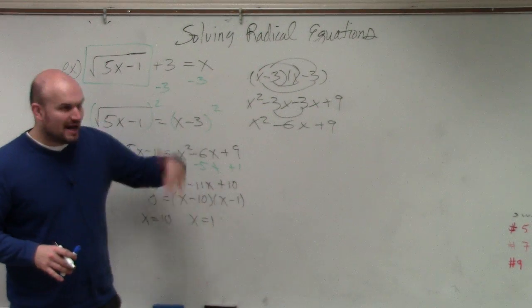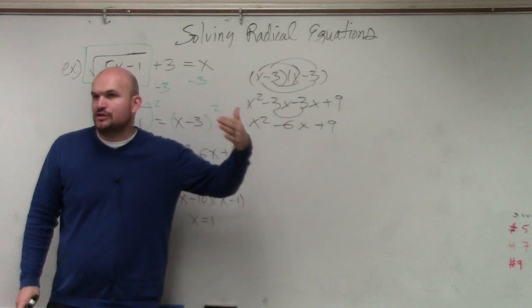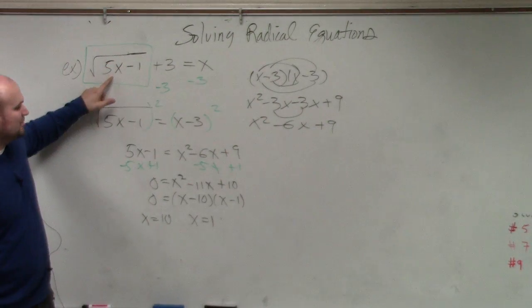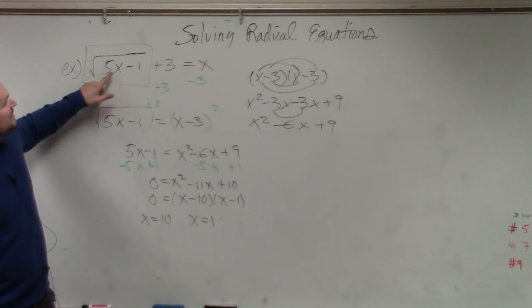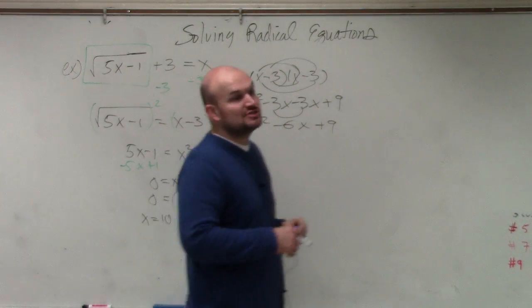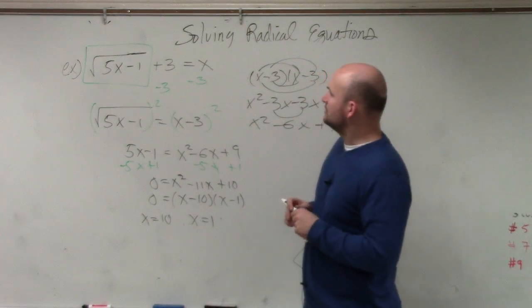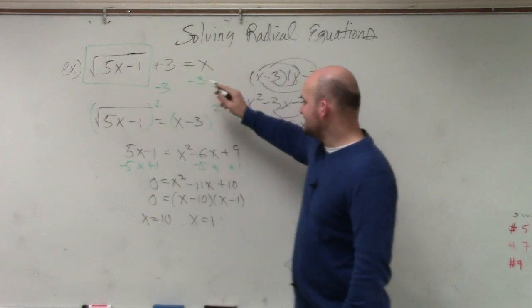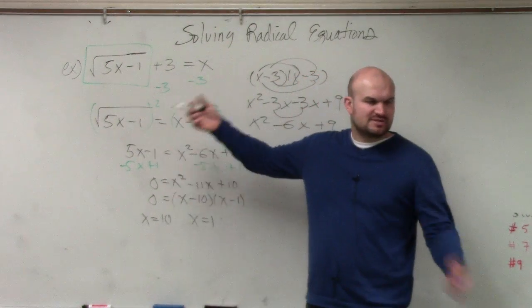You're not going to have that on your test, but I want to make sure that you have checked your answers and you are good with them. So if we put in 10, 5 times 10 is 50. 50 minus 1 is 49. Square root of 49 is 7. 7 plus 3 is 10. And I originally put in 10. 10 equals 10. Good.